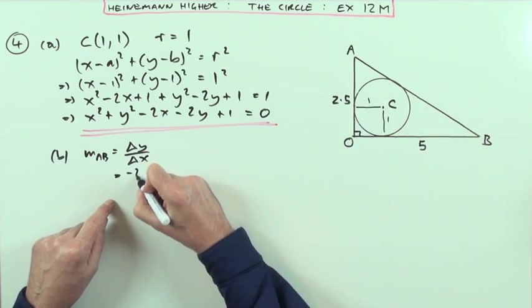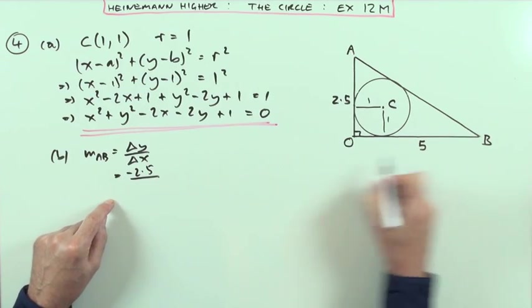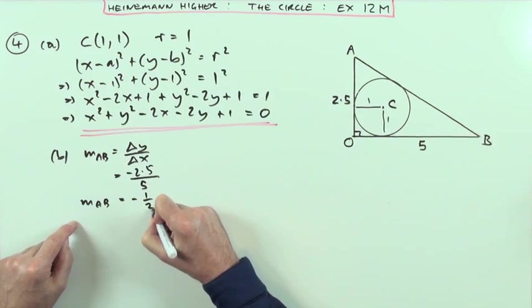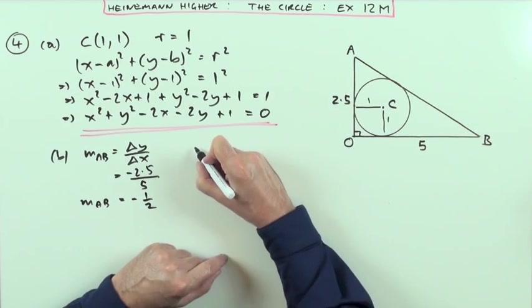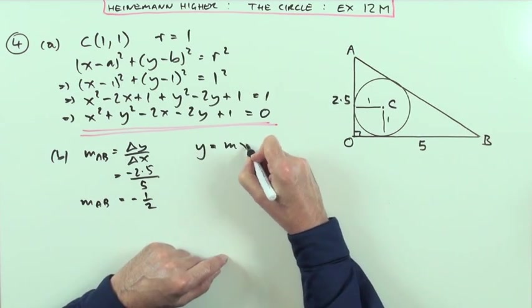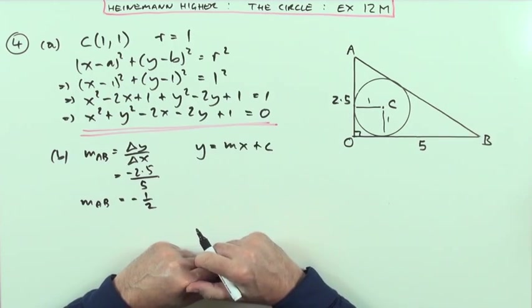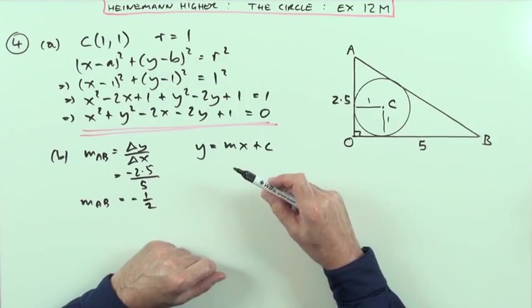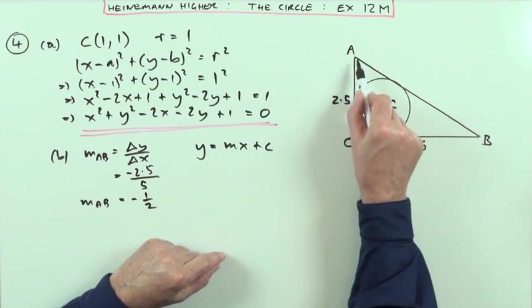I know the distance up and the distance along. It's going 2.5 down - so it's negative 2.5 for 5 along. That means the gradient of AB is negative a half. So straight away I've got y=mx+c.